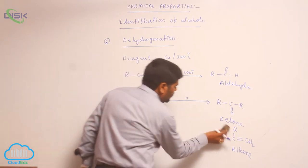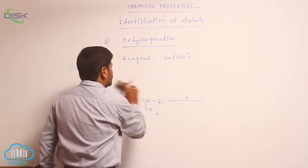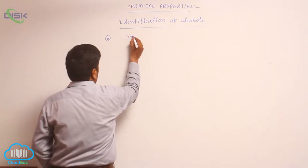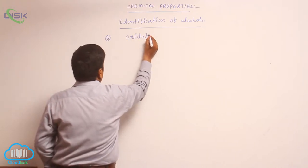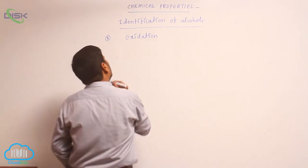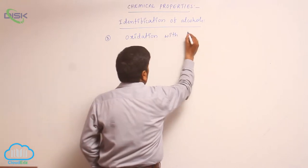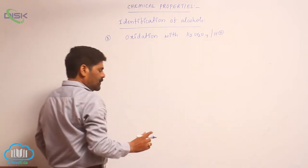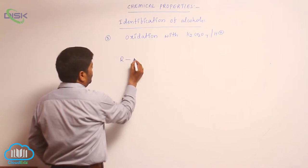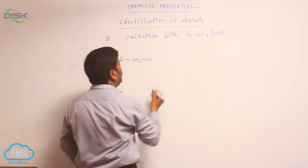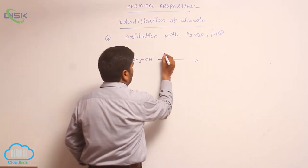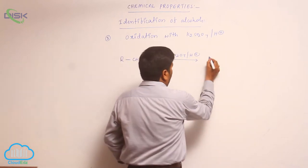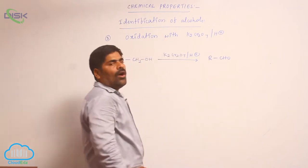The third process is oxidation. Oxidation is carried out with potassium dichromate (K₂Cr₂O₇) in the presence of an acid medium. For example, when a first-degree alcohol reacts with potassium dichromate K₂Cr₂O₇ in the presence of acid medium, it converts into an aldehyde — because it is an oxidation process.